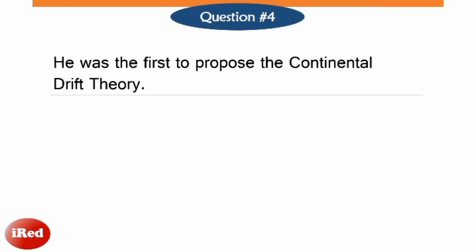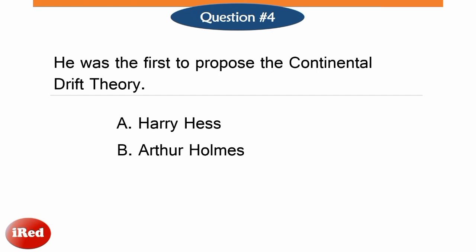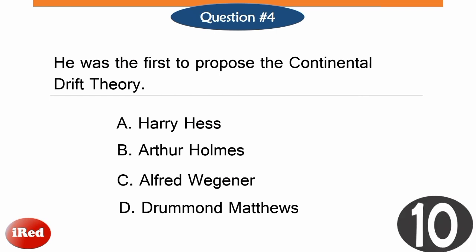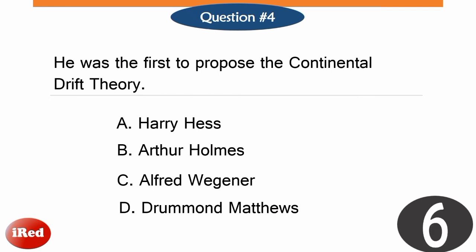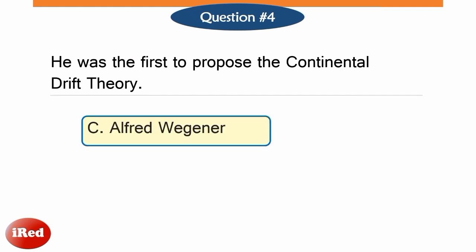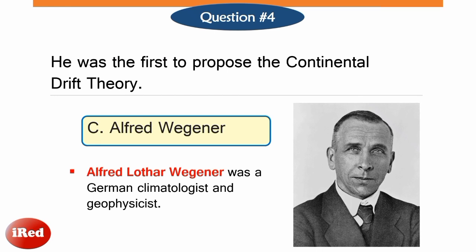The Continental Drift Theory. The correct answer is letter C. Alfred Wegener was a German climatologist and he was the first to propose the Continental Drift Theory.